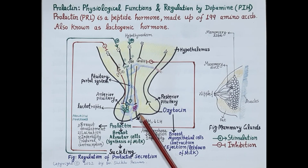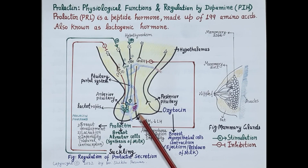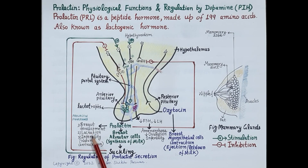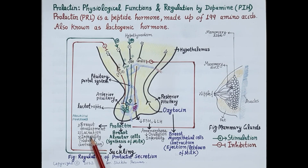Prolactin is a hormone that is essential for the synthesis of milk. It has two main important functions: first is breast development during pregnancy, and the other important function is lactation, that is production of milk by the mammary glands in females after the delivery of a child.